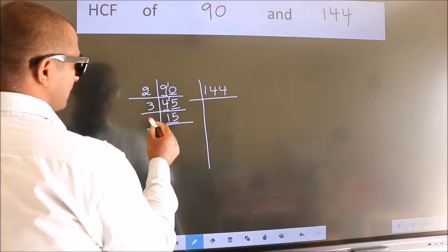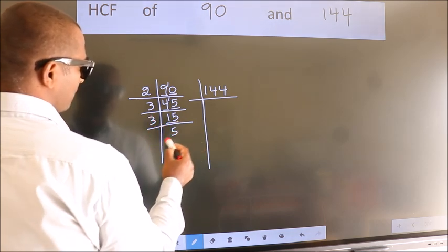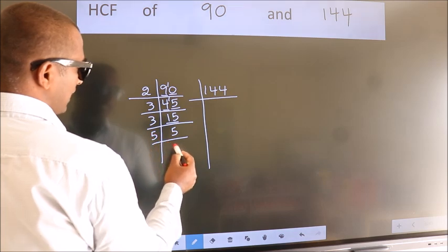Now 15 is 3 fives 15. 5 is a prime number, so 5 once 5.